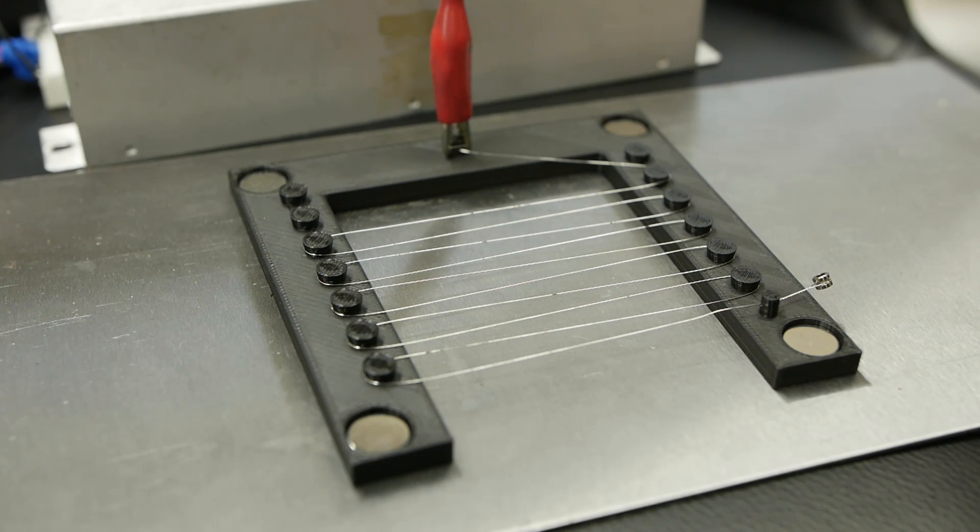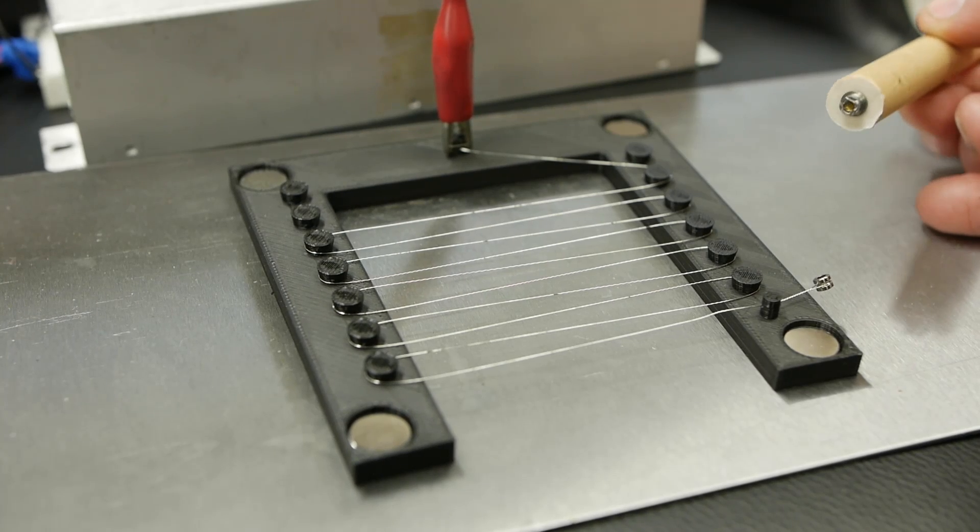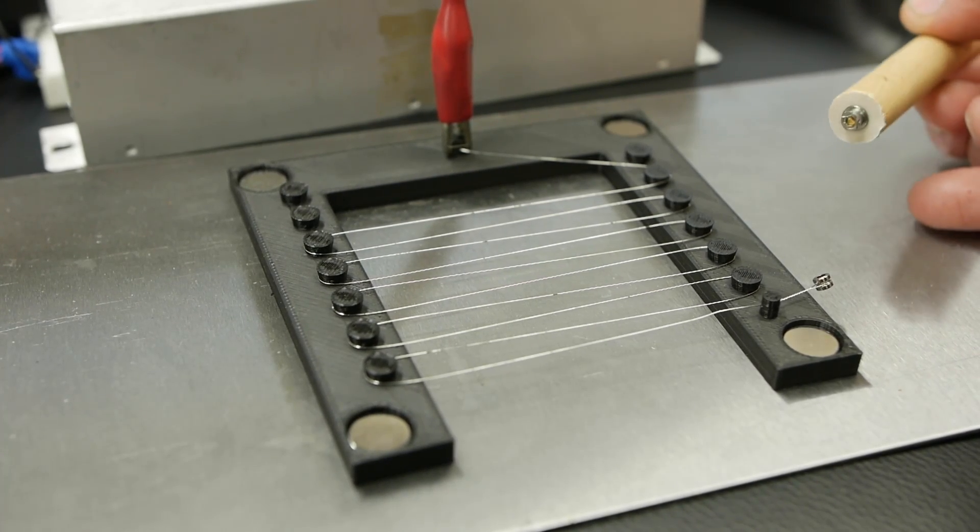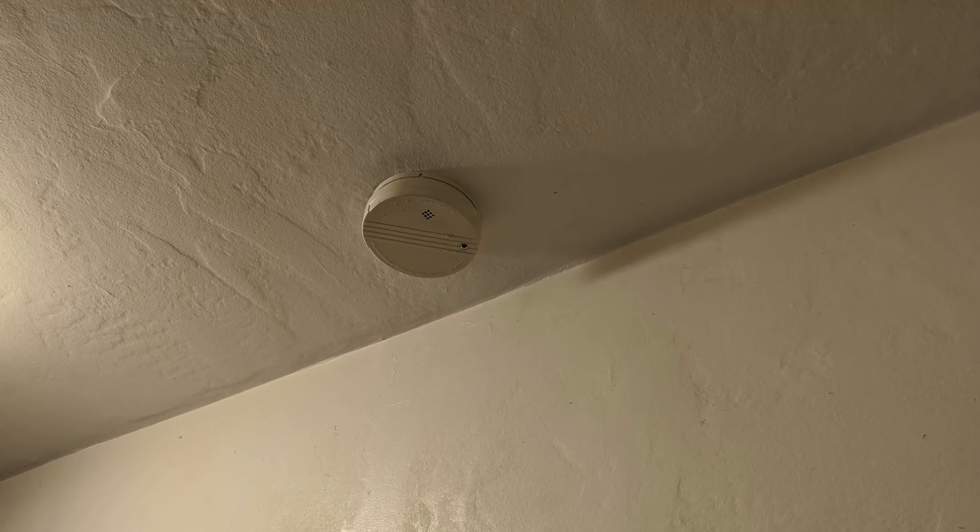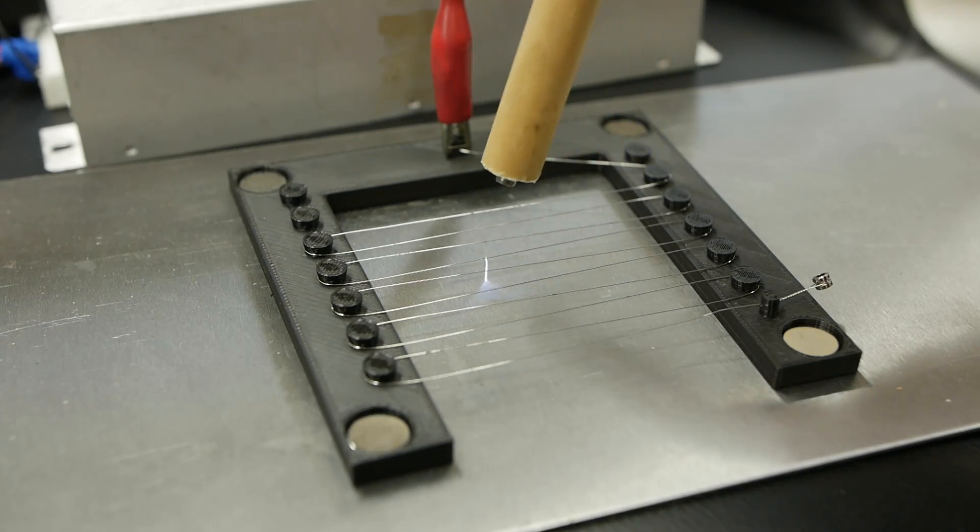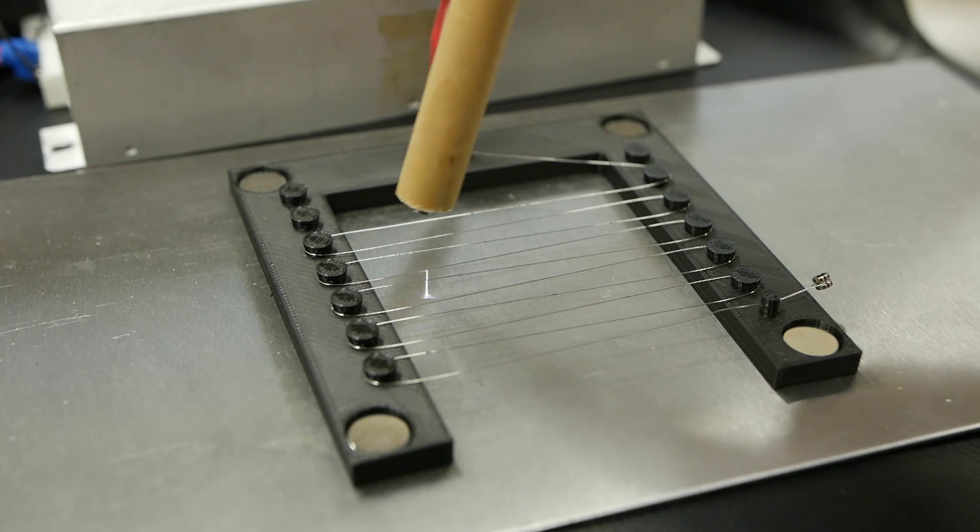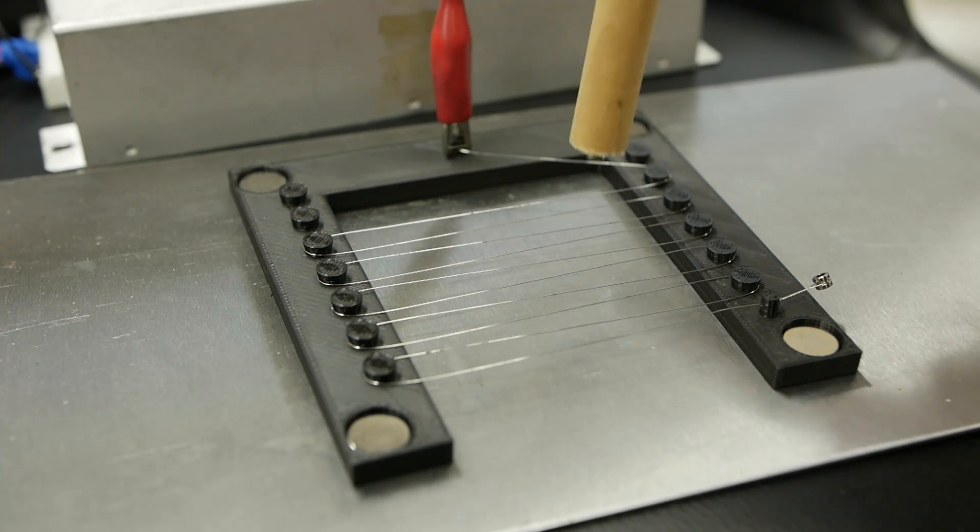Also, you can do this same experiment without the polonium. You can use the little source from an old-fashioned smoke detector. Not really old-fashioned, but the older models used radioactivity to detect smoke particles. And if we use that you can see that it's not quite as intense, but still does a pretty good job of ionizing the air.